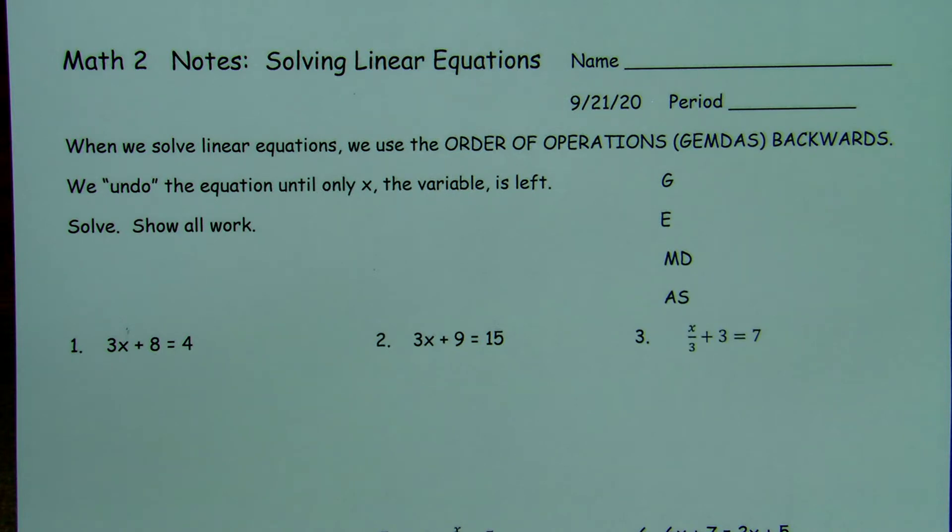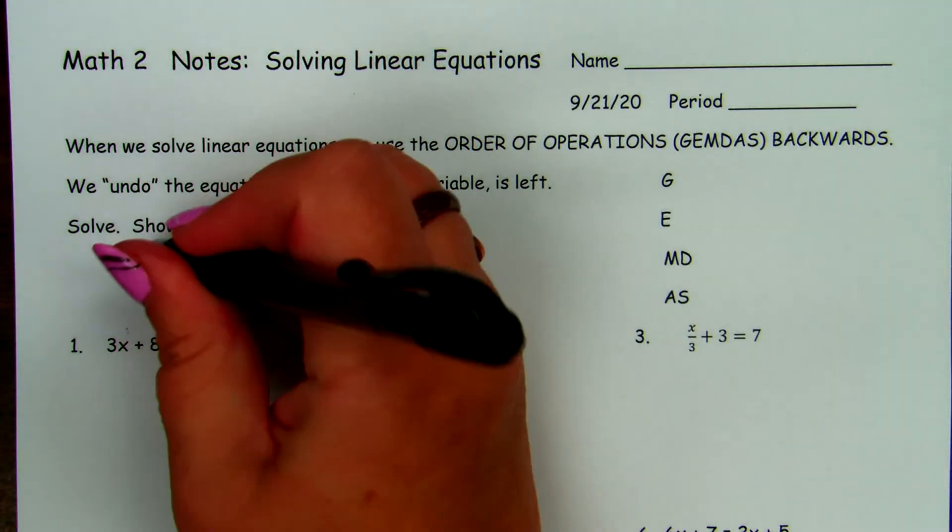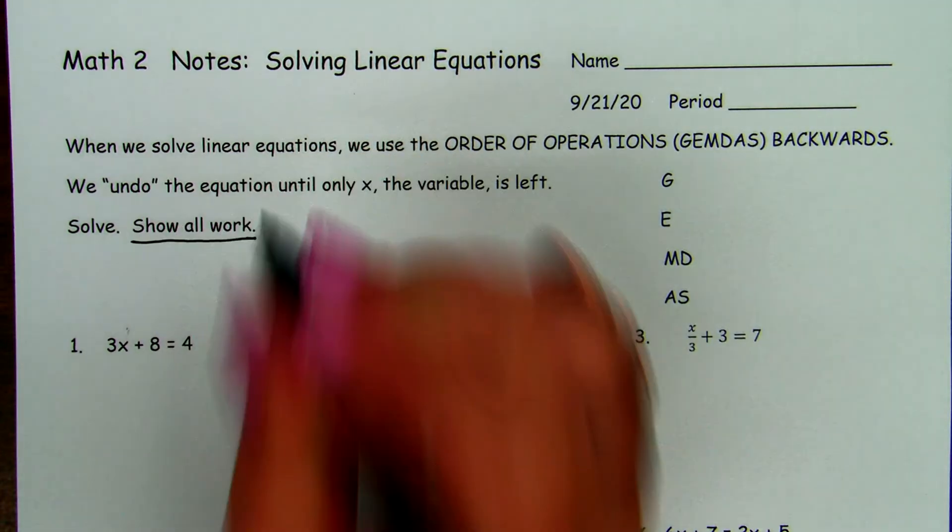We use the order of operations, GEMDAS, backwards. We undo the equations until only x, the variable, is left. And you always show all work when you're doing math.